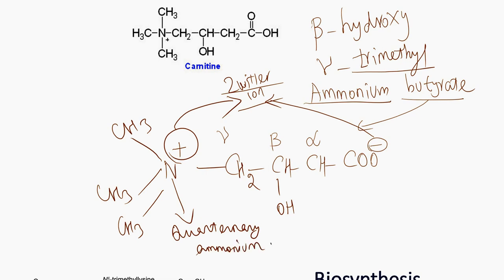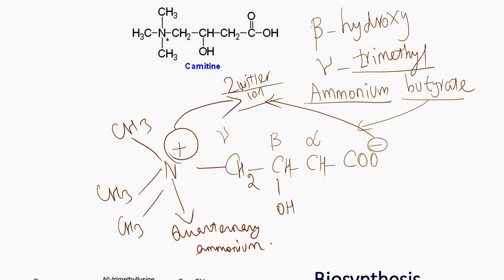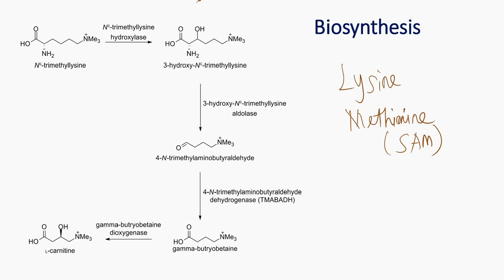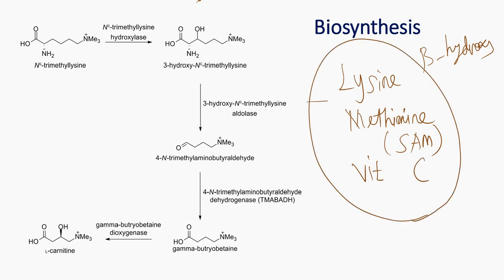Let us see how carnitine is synthesized in the body. Carnitine can be synthesized from lysine and methionine. Methionine is the methyl donor in the form of S-adenosyl-methionine (SAM). In the structure, you notice there is a beta-hydroxy group, so this hydroxylation requires vitamin C. For exam purposes, you should know it is synthesized from lysine and methionine, and vitamin C is needed for hydroxylation.